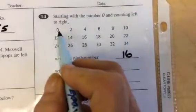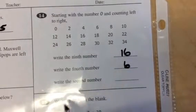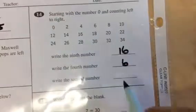Write the fourth number. First, second, third, fourth is six. Write the second number. First, second, there we go, it's two.